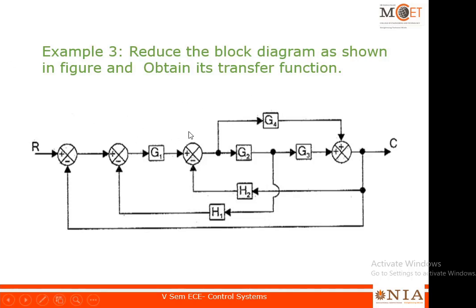This is another example. There are two feedbacks here. Note that this is not a feedback — the input is tapped, goes through g4, and adds here. A feedback should be from the output back to the input; the arrow marks indicate which is a feedback. This path here taps from one point, goes to g4, and gets added — that cannot be called a feedback. Feedback must go from the output side to the input side.